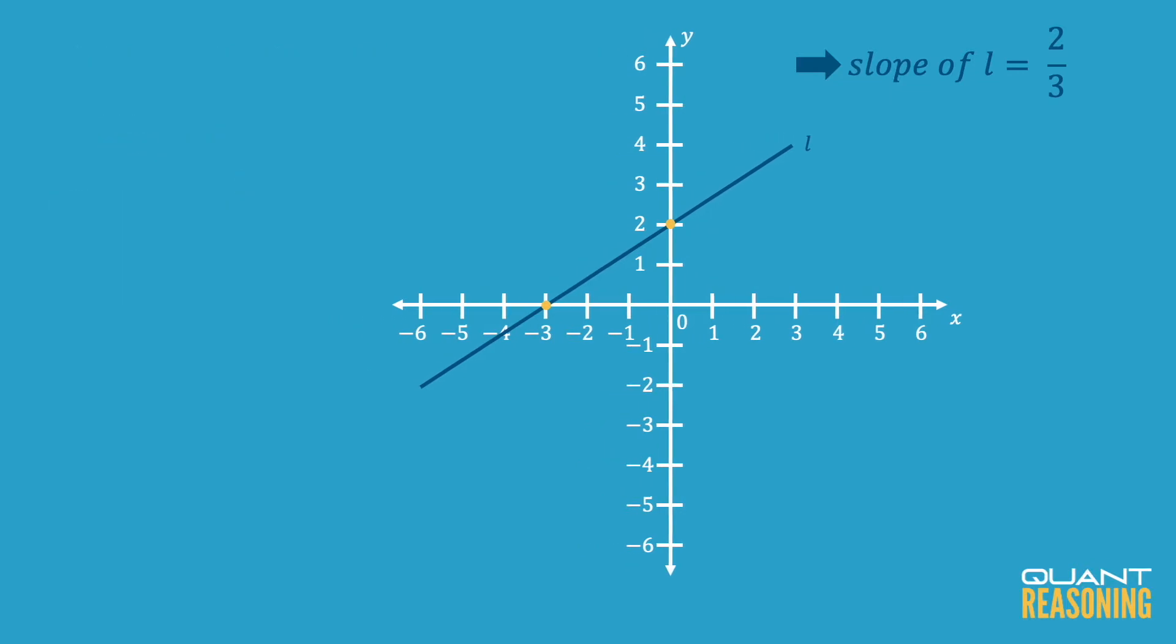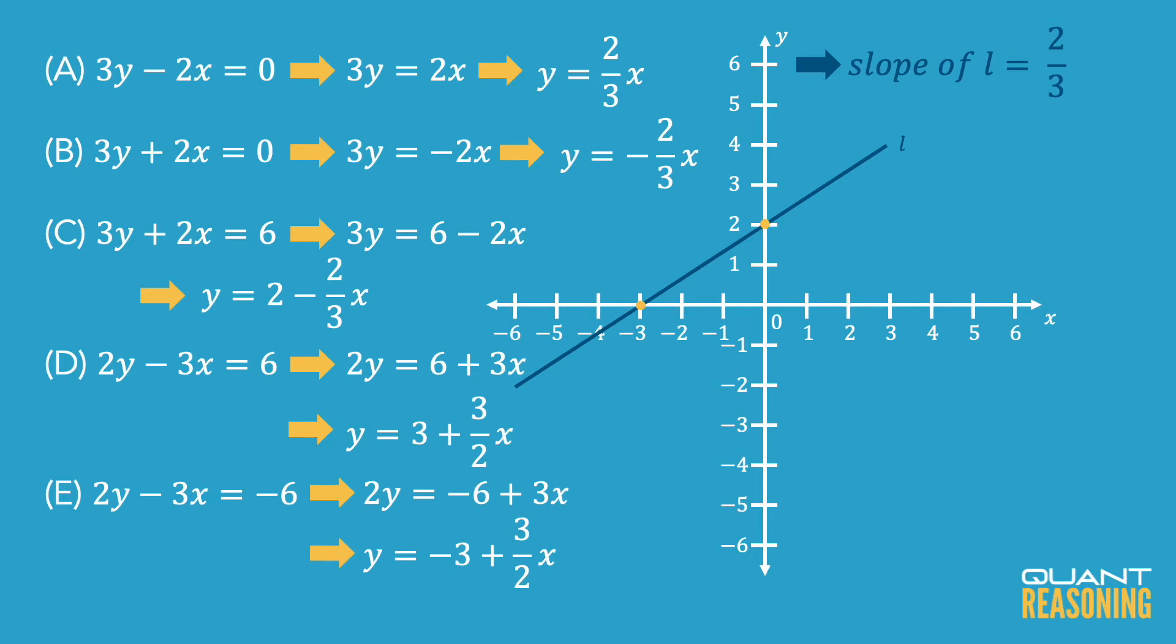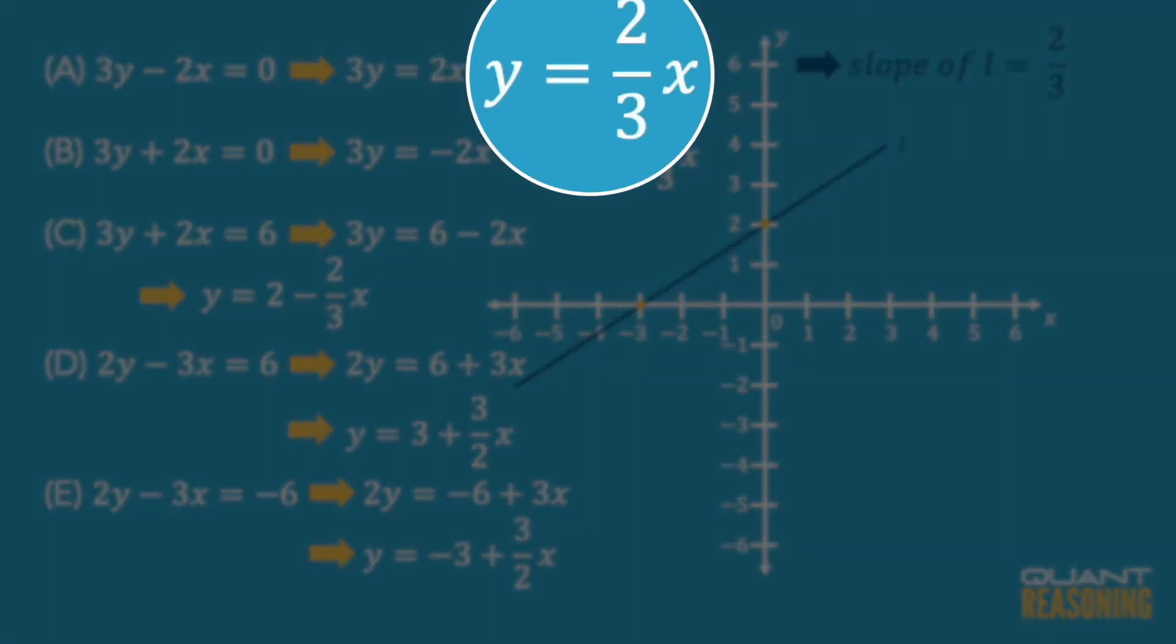So which of these answer choices, once we've isolated y, would have a coefficient of 2 thirds for x? The annoying thing about this question is that when we look at the five answer choices, y isn't isolated in any of them. So there are two ways we can go from here. The long way is to write down every single answer choice and then isolate y until we can find one that matches, that has a coefficient of 2 thirds for the x.